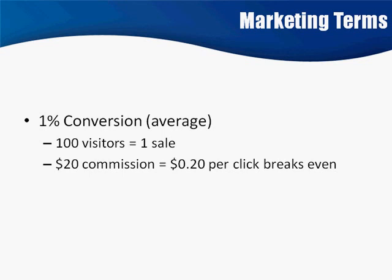Let's explain it again. At a 1% conversion, 100 people come to visit the site and one person buys. If that product pays you $20, that means you could pay up to $0.20 per click and still break even. Anything below $0.20 per click, you'd make a profit. Anything above $0.20 a click and you would lose money sending people to that offer. Because at $0.20 per click with 100 visitors, that's basically $20 — and with one sale, you make $20.